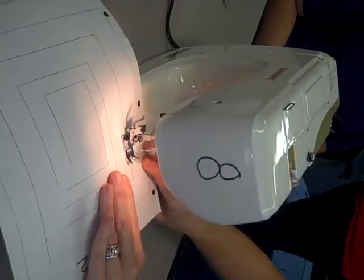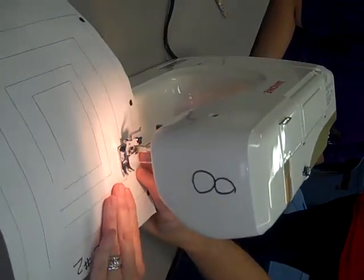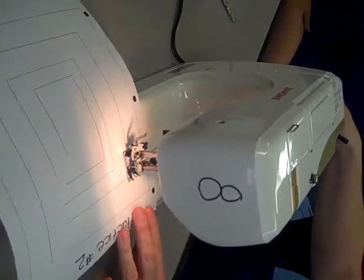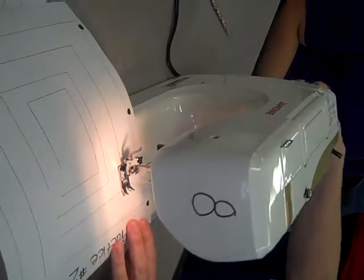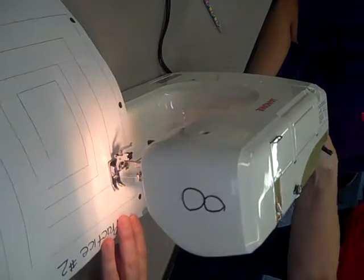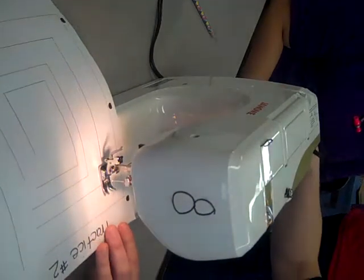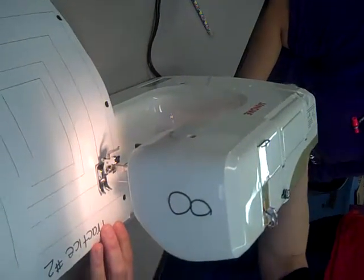You're going to sew like I showed you in the video until you get about a half inch to an inch from the corner, and you're going to stop using the foot pedal. Use the hand wheel and turn towards you always. Turn it to where the needle is positioned, hopefully right in the corner of that 90 degree angle.